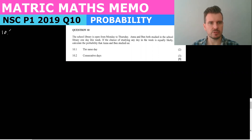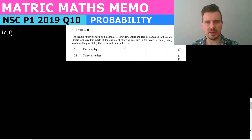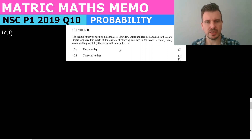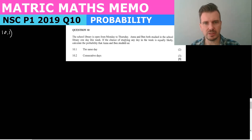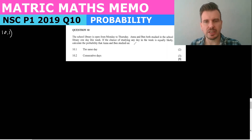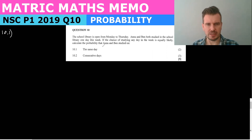The question says two students, Anna and Ben, both study in the school library on either a Monday, Tuesday, Wednesday, or Thursday. Each studies on one day a week, and the chance of studying on any day of the week is equally likely. Calculate the probability that Anna and Ben study on the same day.